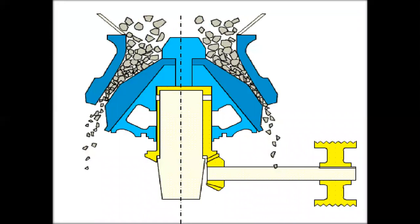Here you can observe the gyratory crusher where the input of aggregates enters at the top. As the aggregates move downward, they are reduced in size — smaller and smaller — until they reach the nominal required size at the output. A large amount of aggregates — approximately 4500 tons per hour — can be crushed using these gyratory crushers. Thank you and see you in the next class.